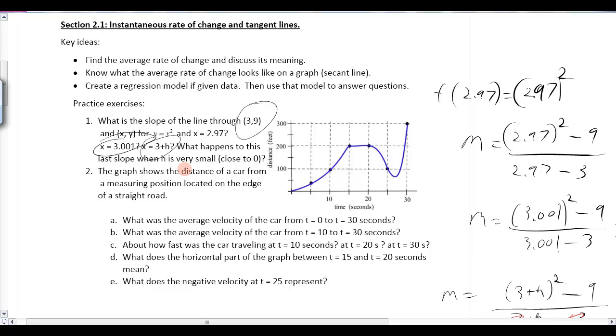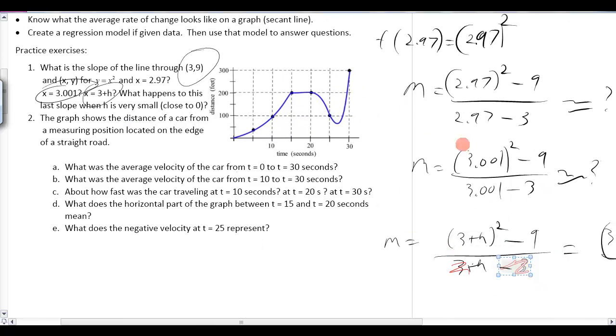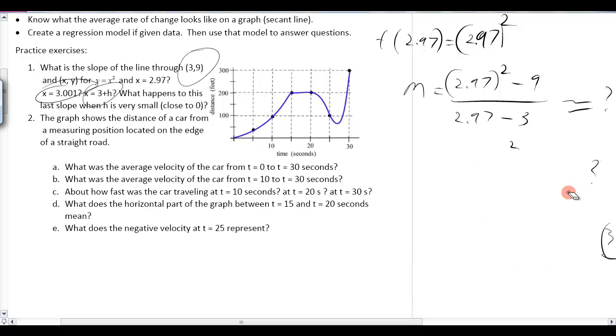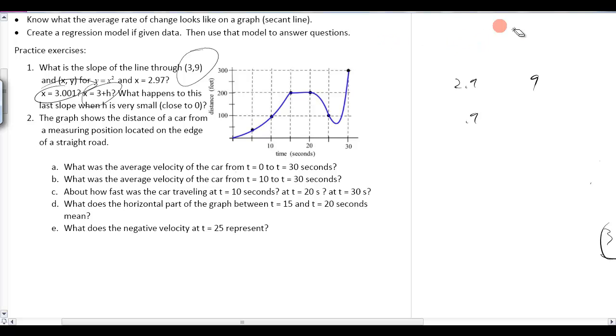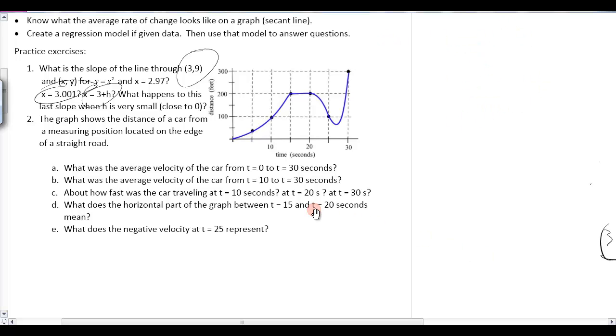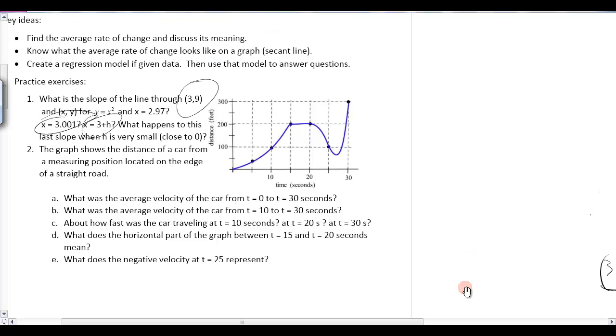Problem number two. This is the exact same thing we just did over here. What is the average velocity of a car from t equals 0 to t equals 30 seconds? So, how do you calculate average velocity? Well, that's average rate of change. Velocity is just another word for speed. Speed is another word for average rate of change. So, we're going to go ahead and just do more slopes. So, they want to know the average rate of change from t equals 0 to t equals 30. Well, t equals 0 is right there. T equals 30 is right there. So, the average rate of change looks like a line connecting them.